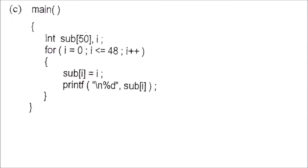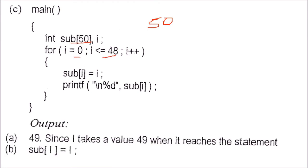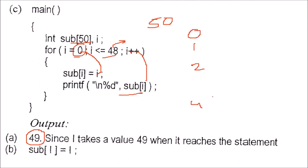This is again an array with dimension 50. You are going from 0 to 48. When you reach the end, i will be 49 after the final i++. The values 0 to 48 are assigned to the array and printed. But because you are going out of range — i takes value 49 when it reaches that state — there is a boundary issue.